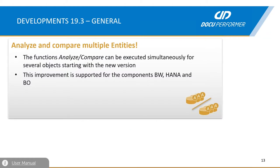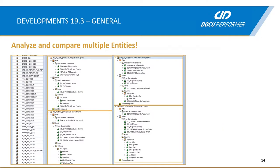We also improved our Analyze Compare functionality. From now on it is possible to compare and analyze multiple entities of an object type at the same time. This is supported throughout the components — for BW objects, for HANA objects, and for BO objects. When you start the Analyze and Compare functionality, you will have a list of all the objects which you selected for comparison. I will show this also in the live demo afterwards.